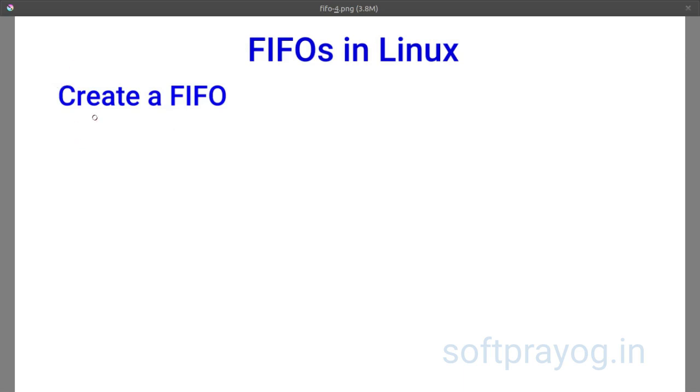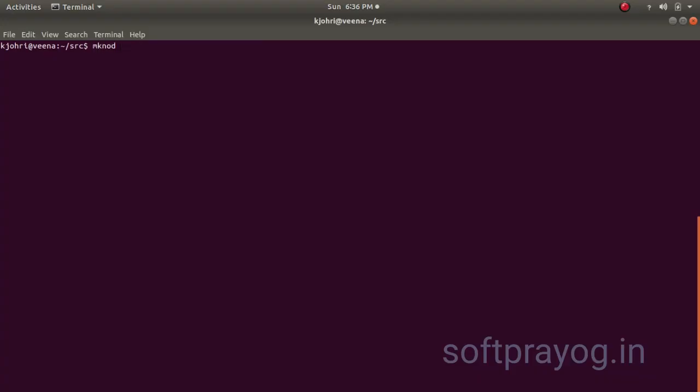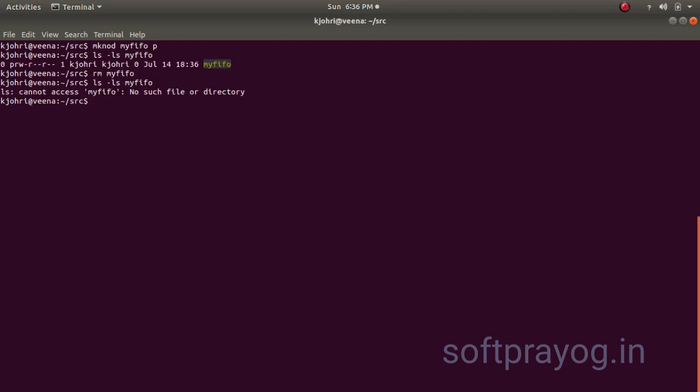How to create a FIFO? We can create a FIFO from the shell using the mknod command. We can see it with ls-ls and we can remove it just like any other file.